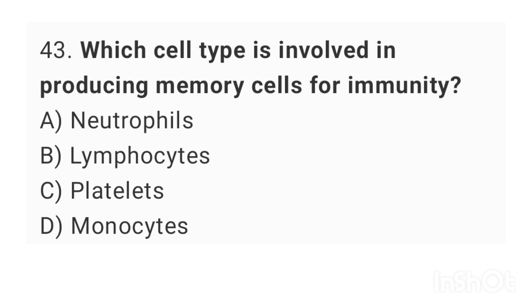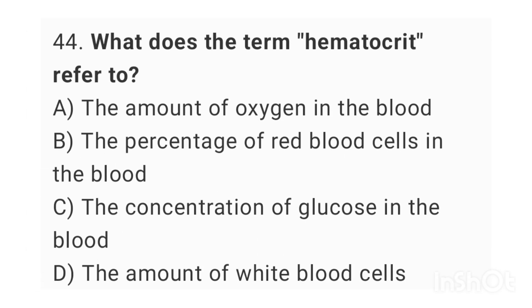Question number 43: Which cell type is involved in producing memory cells for immunity? The right answer is option B: lymphocytes. Question number 44: What does the term hematocrit refer to? The right answer is option B: the percentage of red blood cells in the blood.